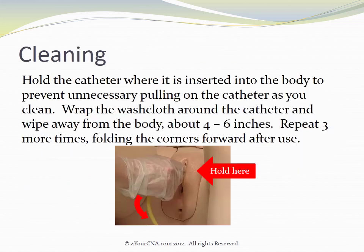Hold the catheter where it is inserted into the body to prevent unnecessary pulling on the catheter as you clean. Wrap the washcloth around the catheter and wipe away from the body about four to six inches. Repeat three more times, folding the corners forward after each use.